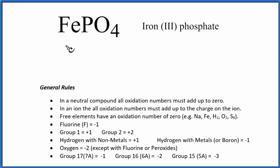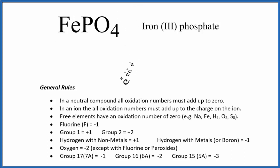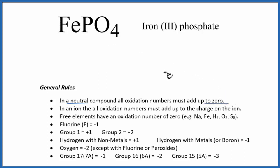In this video, we'll find the oxidation numbers for each element in FePO₄, that's iron 3-phosphate. To do that, we need to know that this is a neutral compound — there's no plus or minus charge. And if we have a neutral compound, the oxidation numbers add up to 0 for each of the elements. That's really useful.